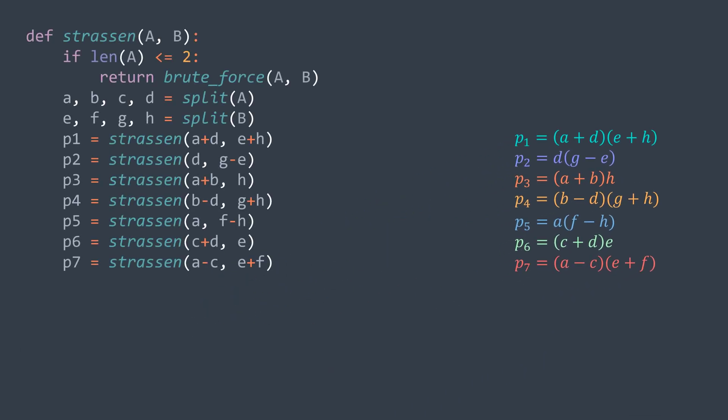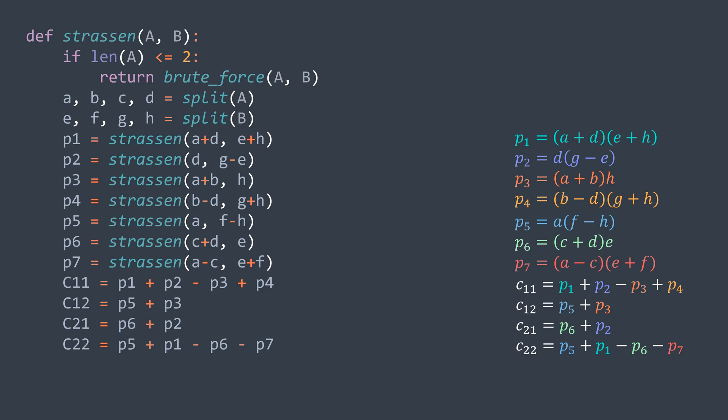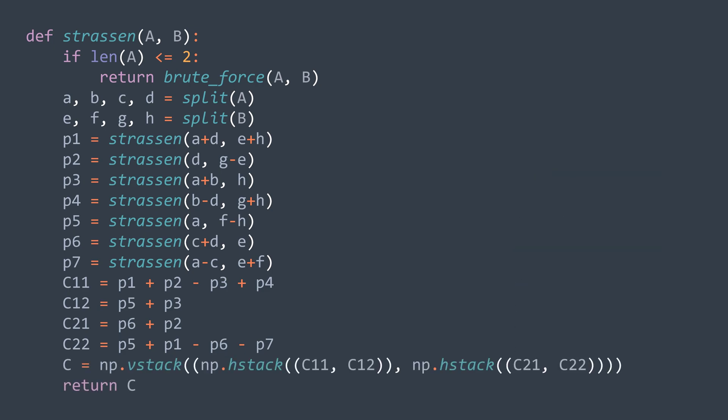So in code, we calculate our seven products, then we calculate c11, c12, c21, and c22. And we join them into a matrix that we return. And that is the Strassen's algorithm.